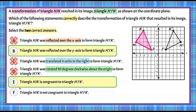Let's check F just to be sure: triangle HJK is not congruent to triangle H'J'K'. If this were true, then B could not be true, since a reflection must be congruent to the original figure. So we rule out answer F. Our two correct answers are B and E: triangle HJK is reflected over the y-axis to form H'J'K', and the image is congruent to the original figure.